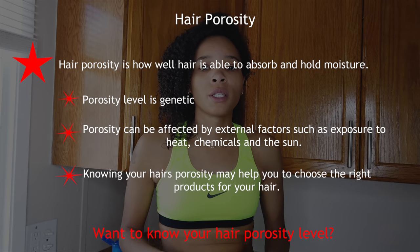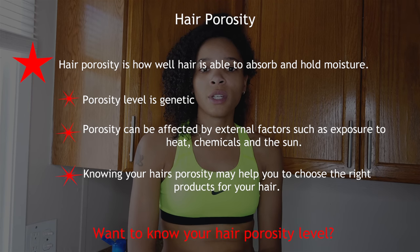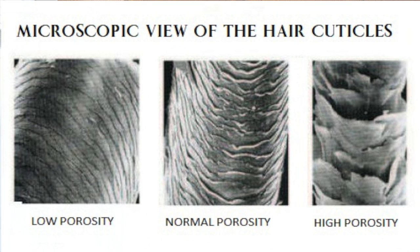Hair porosity is how porous your hair is — how well it's able to absorb water and hold on to it. Low porosity basically doesn't absorb water well, and when it does, it takes forever to release it because the cuticles are kind of closed. Medium, also referred to as normal, is the ideal porosity. High porosity is the opposite — the cuticles are almost open, raised, so water gets in and out freely, meaning your hair dries out a lot faster.